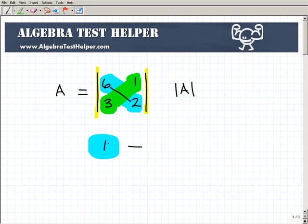6 times 2 is 12. And then, right here, let's just kind of keep this color coordinated. 3 times 1 is 3. And of course, that is 9. So the determinant is going to be 9, or the determinant of matrix A is 9. Real easy.